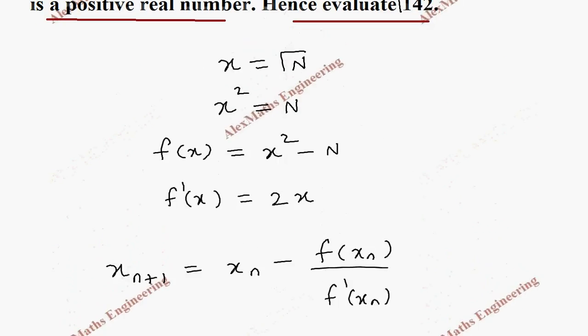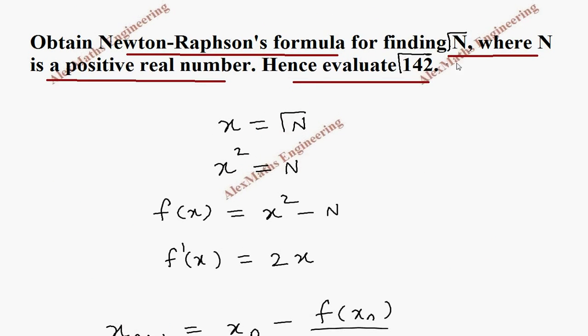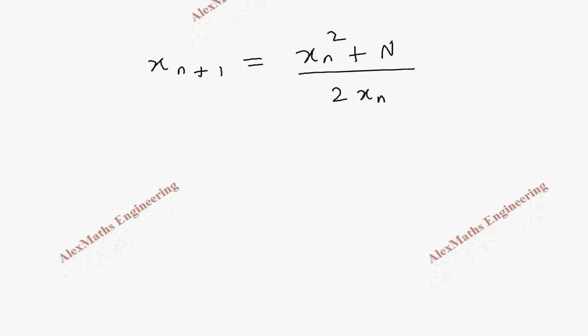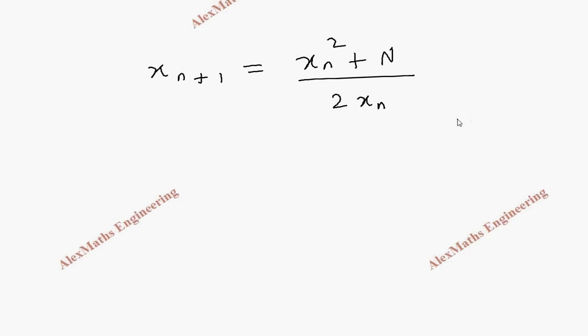Now we have to calculate the value of root 142. We know root of 144 is 12, so root 142 is closer to this. So we start from x naught as 12.